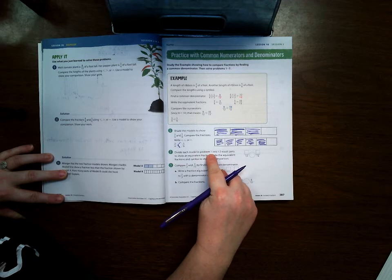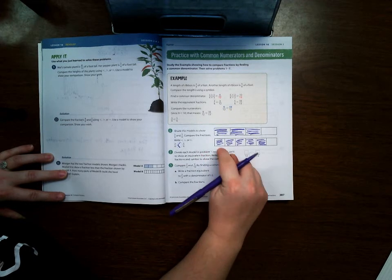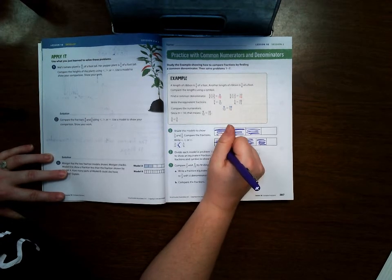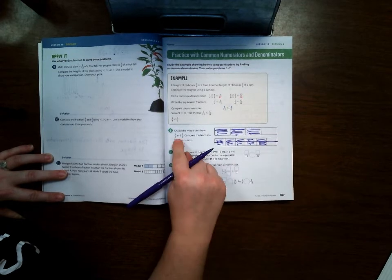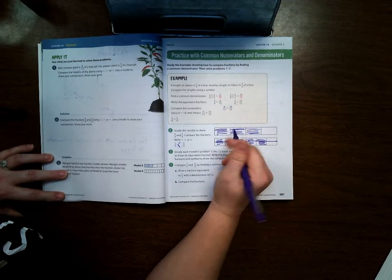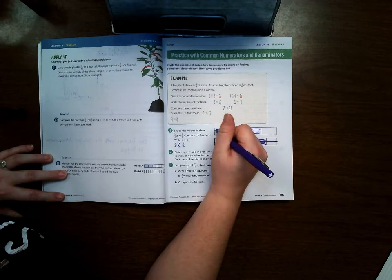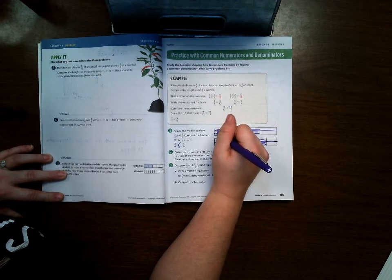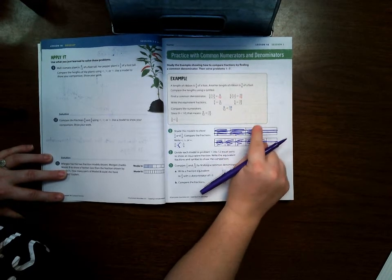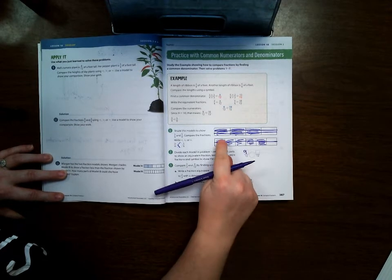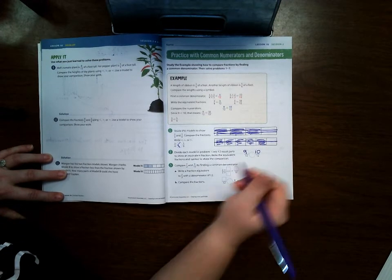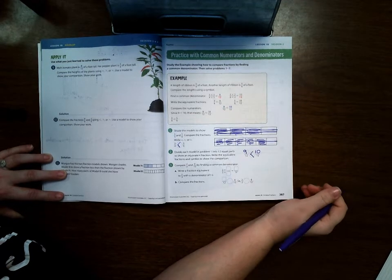Divide each model in problem 1 into 12 equal parts. Well this one is 1, 2, 3, 4, 5, 6 so we could divide this one in half. But this one, how do we make 4 into 12? So we're going to have to divide each piece into 3. So that means we need 2 lines. There we go. So now we have 1, 2, 3, 4, 5, 6, 7, 8, 9 twelfths. And 1, 2, 3, 4, 5, 6, 7, 8, 9, 10 twelfths. And when we do this we can still see that 10/12 is bigger than 9/12.